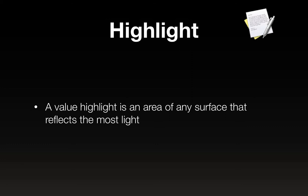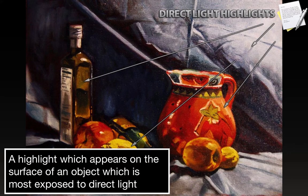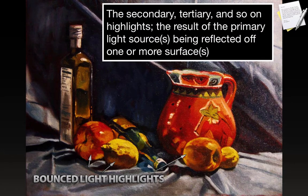A highlight is a reflection of light — basically an area of any surface that reflects the most light. A highlight appears on the surface of an object most exposed to direct light, and you can see some highlights in the various surfaces here, which also shows where the light source must be coming from in this painting. Secondary, tertiary, and so on highlights are the result of primary light sources being reflected off one or more surfaces — those are referred to as bounced light highlights.